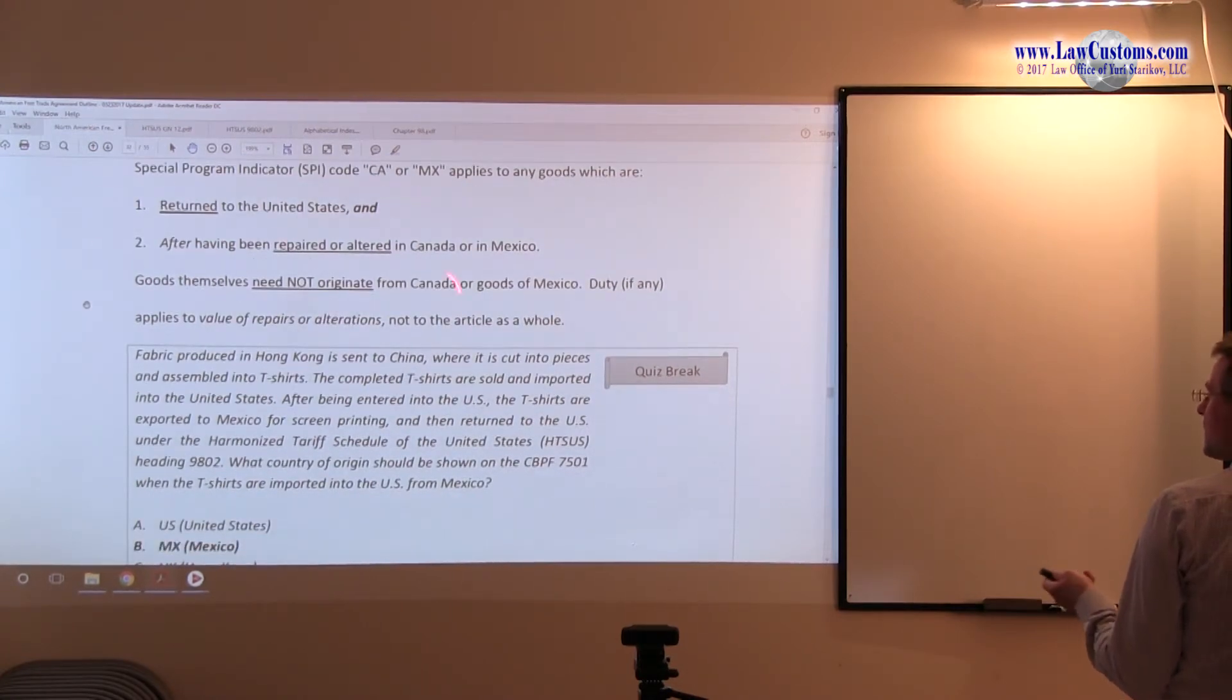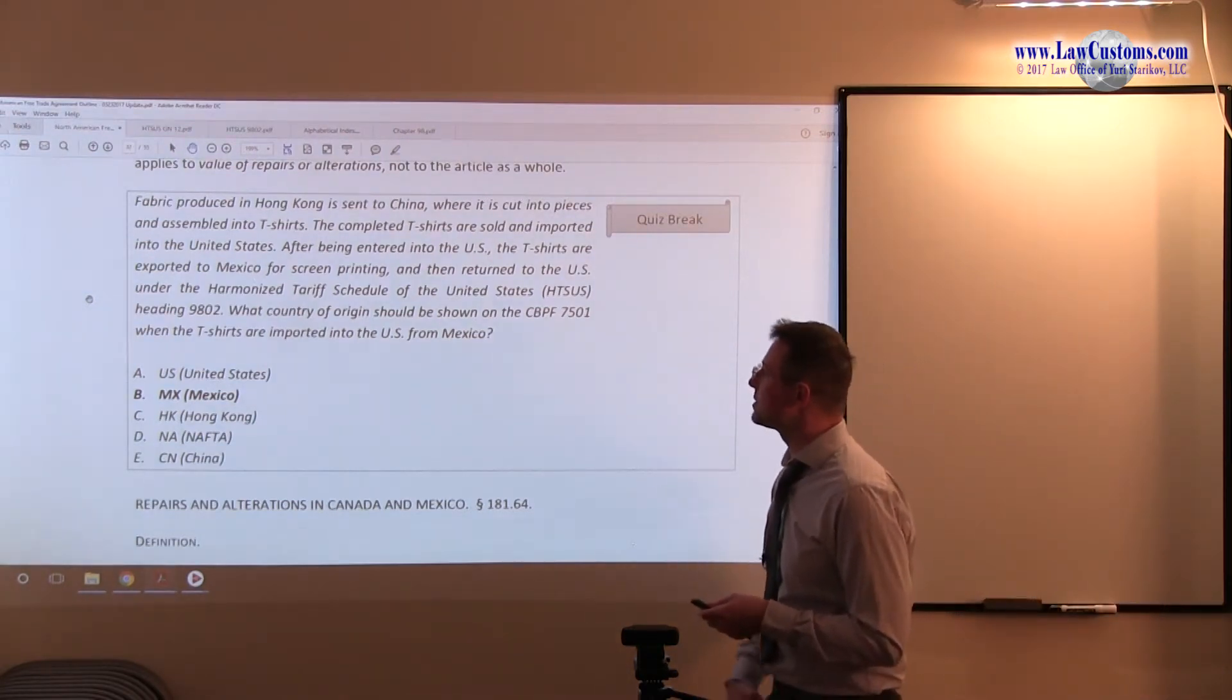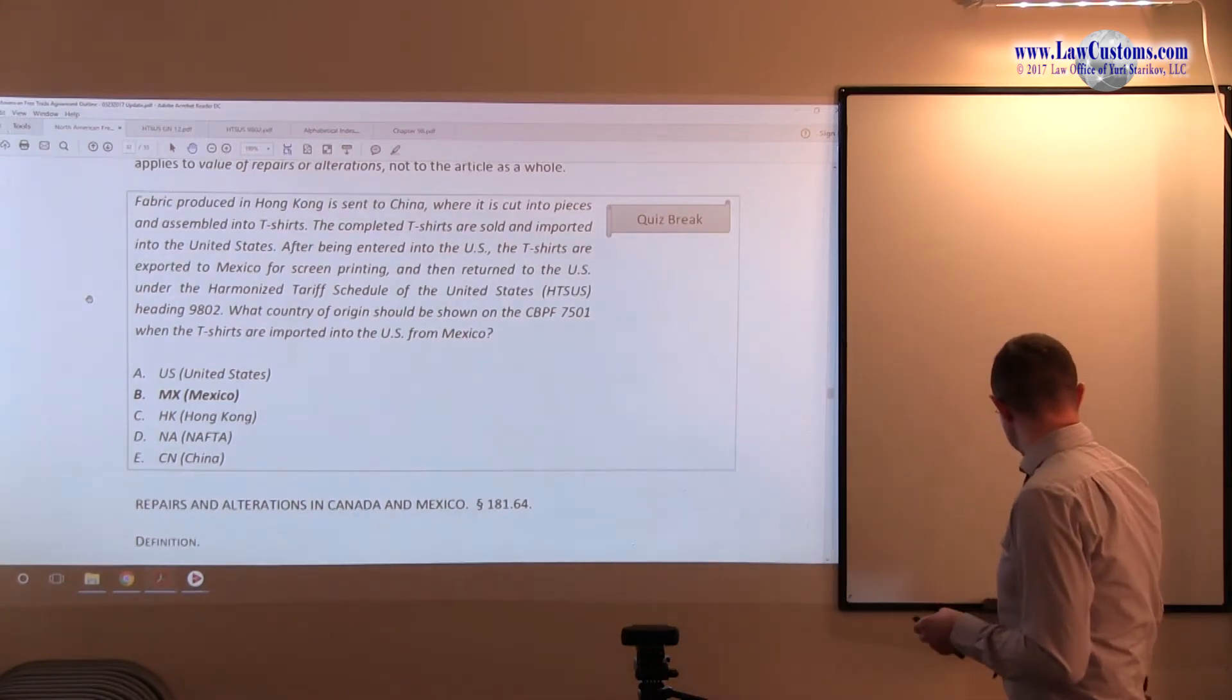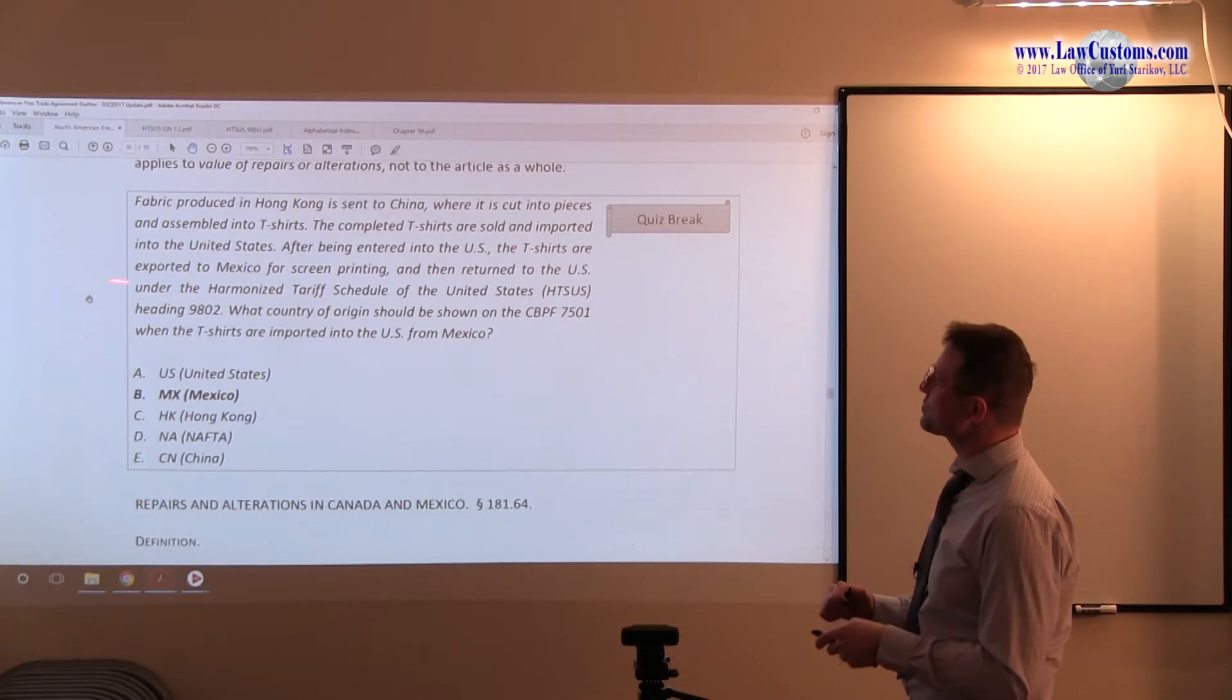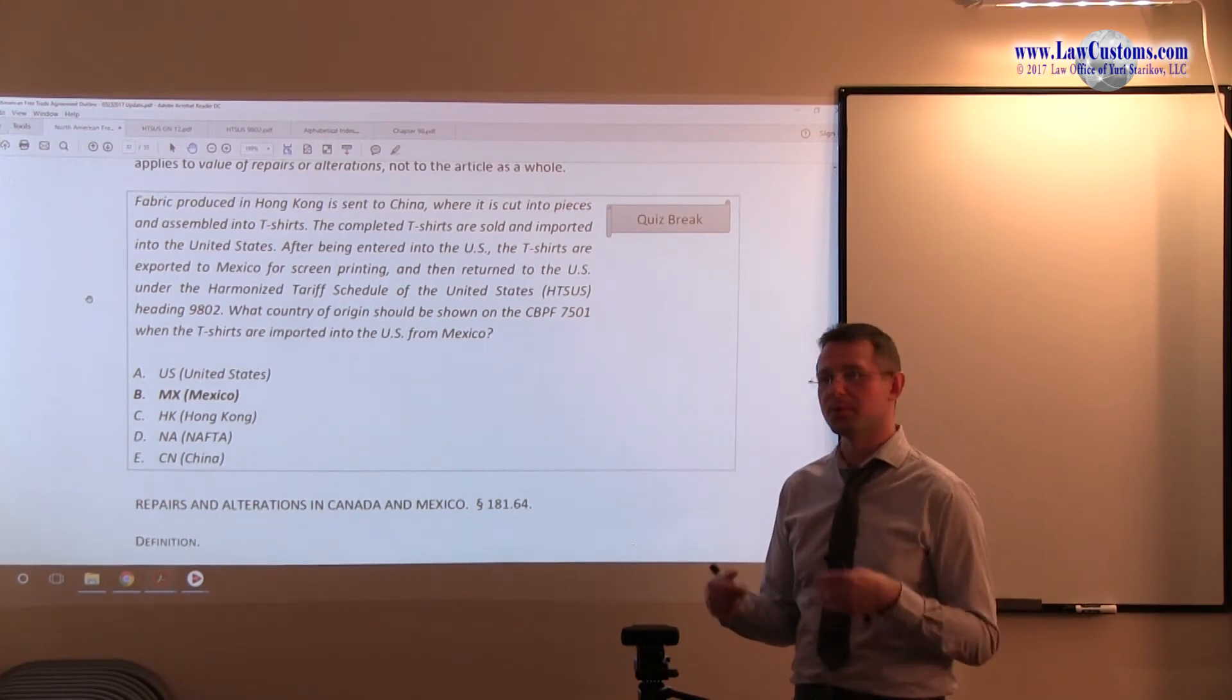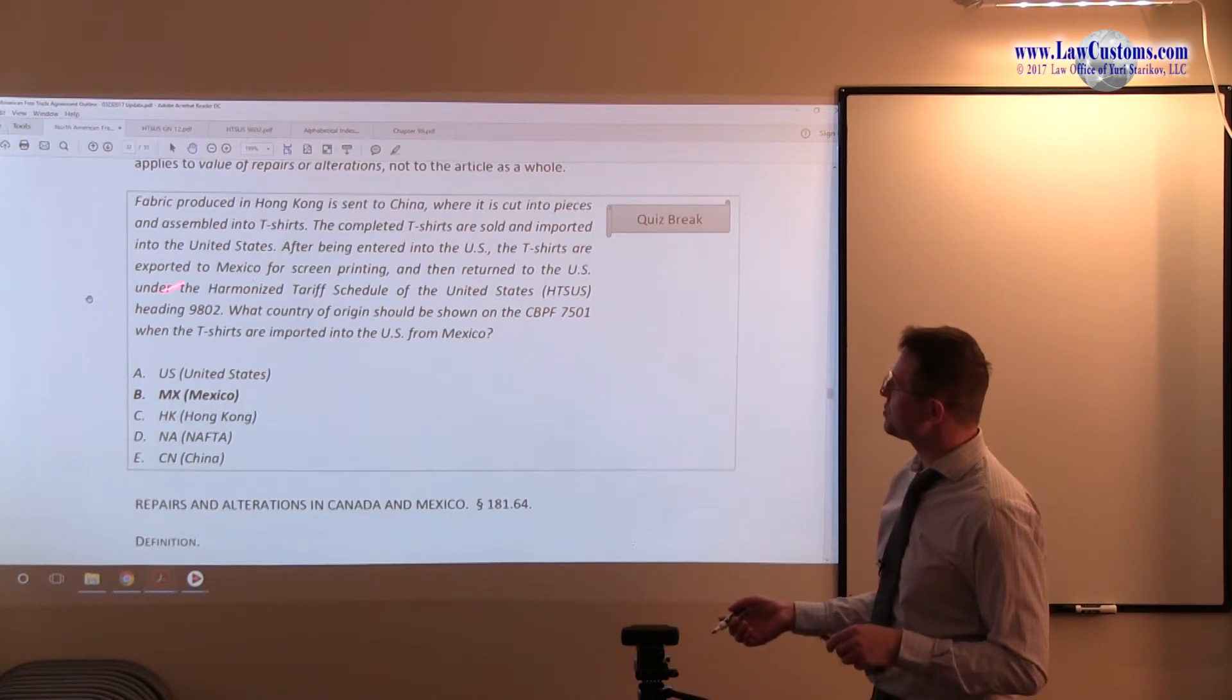So, the point is that this general note 12 process is not required. And here is how it plays out in the world of licensed customer broker examination. So examiners ask, fabric produced in Hong Kong is sent to China, where it is cut into pieces and assembled into T-shirts. The completed T-shirts are sold and imported into the United States. After being entered into the United States, the T-shirts are exported to Mexico for screen printing. So only the screen printing. So they put some kind of logo or label or some kind of photograph on that T-shirt. And after this, it has been returned to the United States.